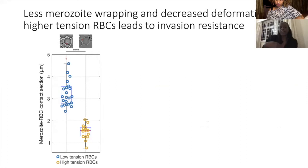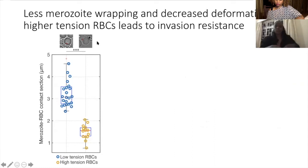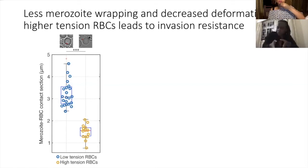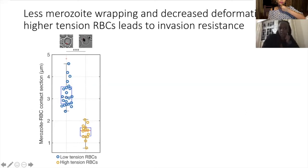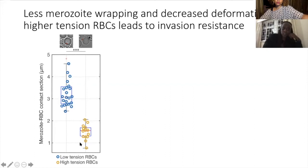To understand how high tension impedes the parasite's ability to enter the red blood cell, we used live imaging to measure the amount of membrane wrapping by the parasite. When a parasite makes contact with a red blood cell, it wraps the membrane around itself to enable entry. Red blood cells with high membrane tension showed less wrapping, while those with lower tension allowed more wrapping. High tension means less contact and wrapping; low tension means more contact and more wrapping, enabling invasion.